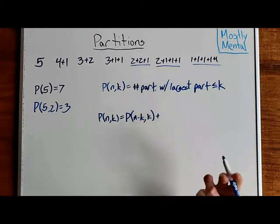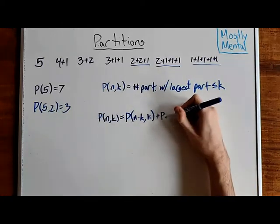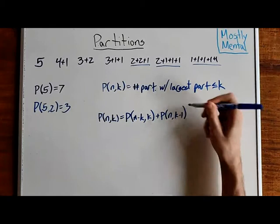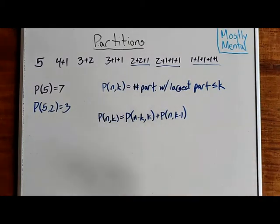And, if the first part isn't k, then we can just lower our bound. And so, we've got p of n, k minus one, since every partition with largest part, k minus one, is still valid.